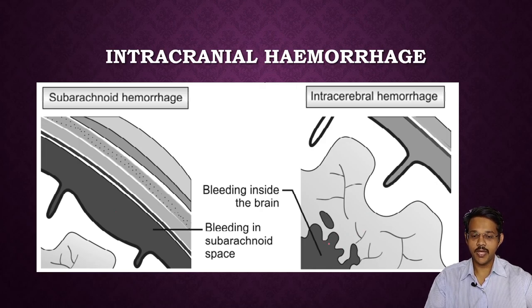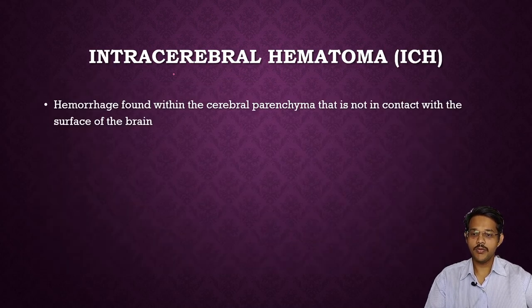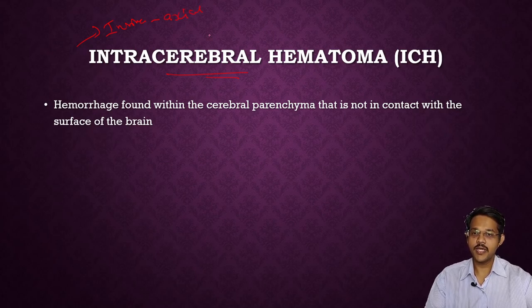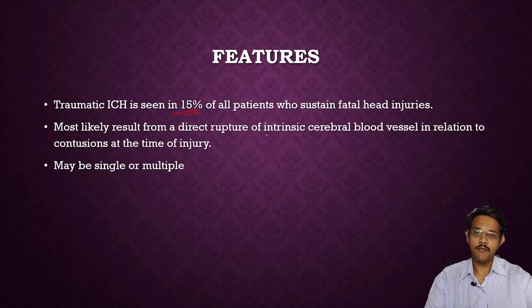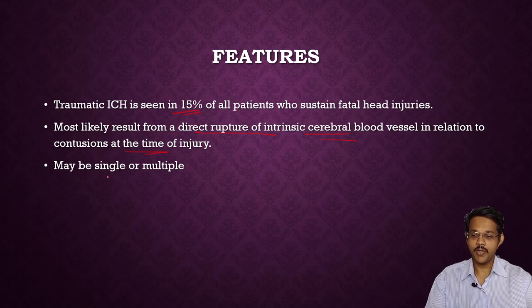Intracerebral hematomas are mainly intra-axial hematomas — hemorrhages formed within the cerebral parenchyma not in contact with the surface of the brain. Traumatic intracerebral hemorrhage is a complication seen in 50% of all patients who sustain fatal head injuries. It most likely results from direct rupture of intrinsic cerebral blood vessels in relation to contusion at the time of injury. It may be single or multiple, with multiple regions of the brain affected.